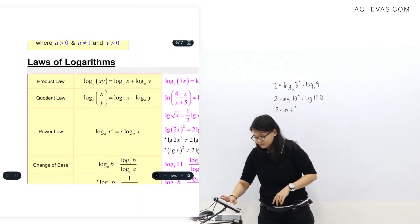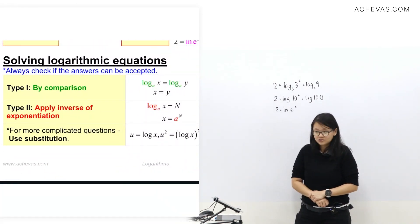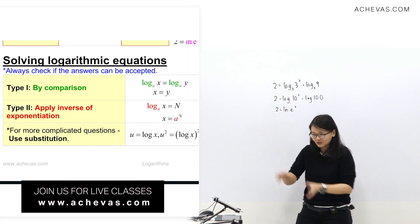Actually, logarithm don't have type. So you look at here. Although I write type 1, type 2, you're not forced to use. You can use type 1, you can also use type 2. Not that exponential - type 1 is type 1, type 2 is type 2, you're forced to use the method. Logarithm is actually quite flexible.